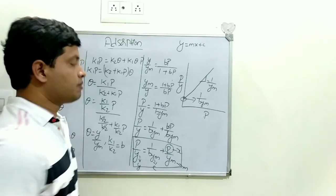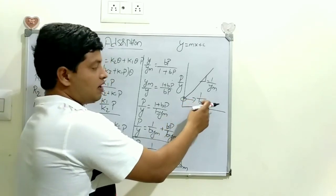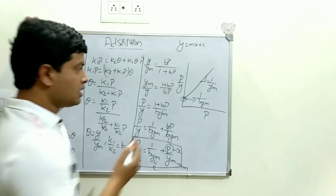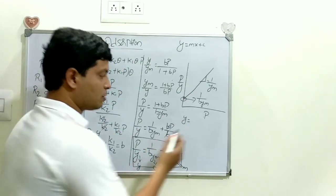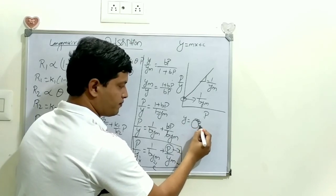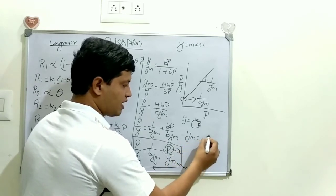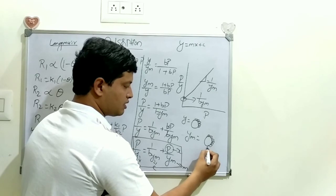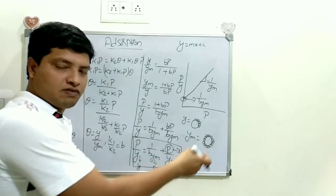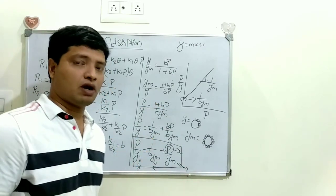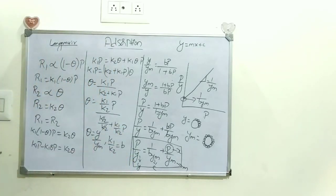By conducting the experiment and plotting the graph, you can find out the values of b and ym. Here, y is the amount of gas adsorbed per unit mass of adsorbent, and ym is the amount of gas adsorbed per unit mass of adsorbent when the complete monolayer is formed. By this, you can derive the Langmuir equation easily. Thank you.